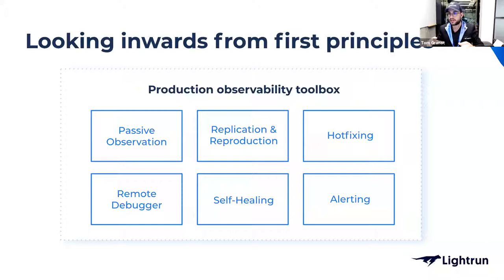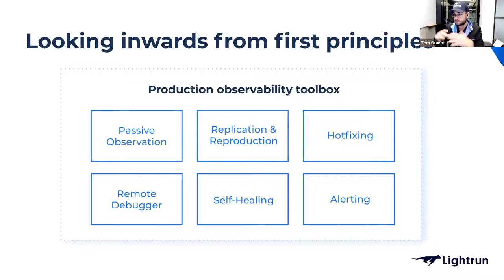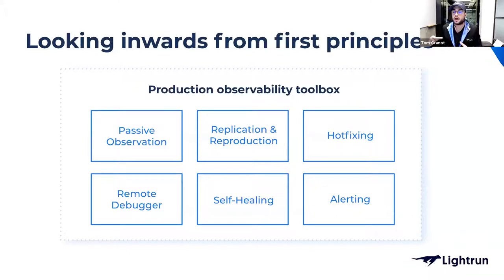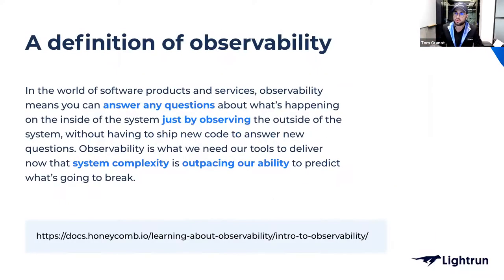There's a common interface all these roles interact with to better understand production software. What I've gathered here is a rough division of all the things they do — I call this the Production Observability Toolbox. Before we dive into each tool, let's take a moment to discuss observability — a concept being thrown around a lot recently. Honeycomb defines it as: you can answer any questions about what's happening inside the system just by observing the outside, without having to ship new code to answer new questions.